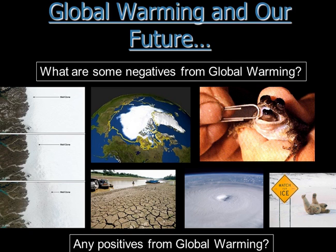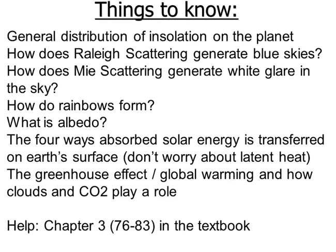Here's your things-to-know list: general distribution of insolation on the planet, Rayleigh scattering, Mie scattering, rainbows, what albedo is, the four ways energy is transferred after absorption, and the greenhouse effect and global warming. We don't actually have a textbook so ignore that reference. Hope you've enjoyed it — have a great rest of your day, thanks for listening.